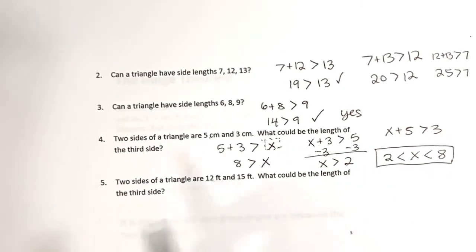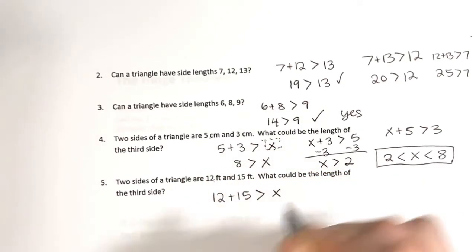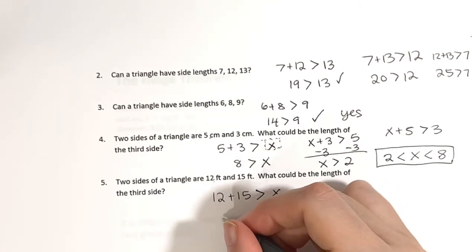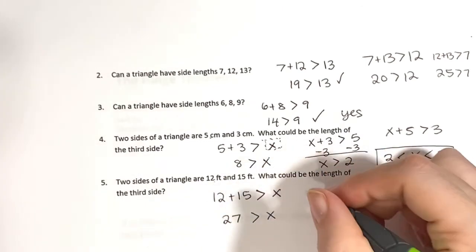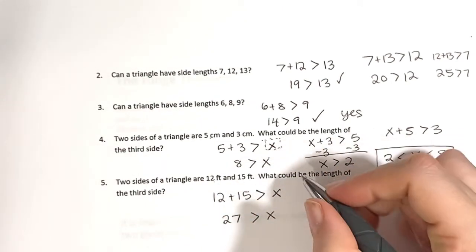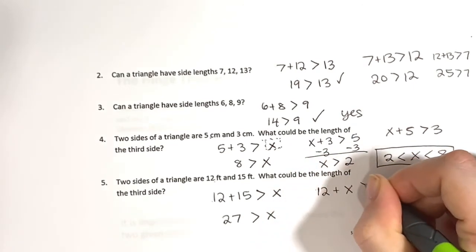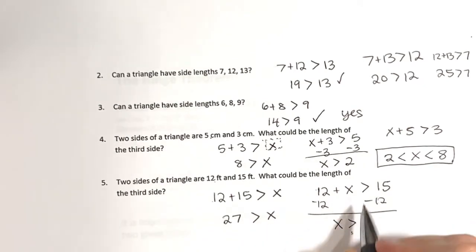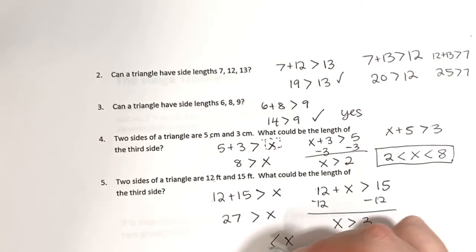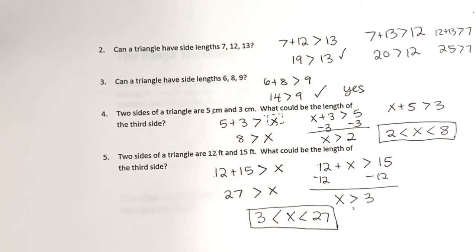Another example: sides twelve and fifteen. Adding them gives 27, so x must be less than 27. For the lower bound, twelve plus x must be greater than fifteen, so x must be greater than three. The range is three less than x less than 27. As long as the third side is between three and 27, the triangle will work.